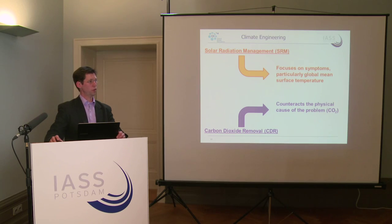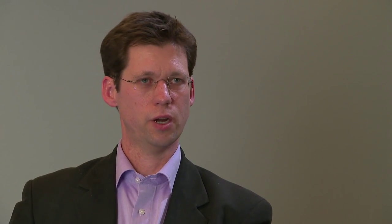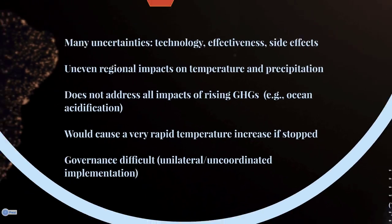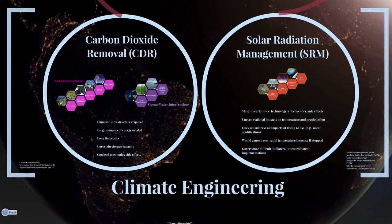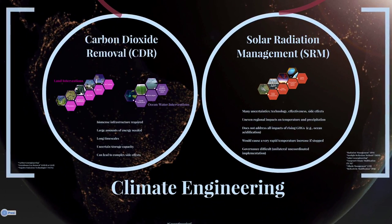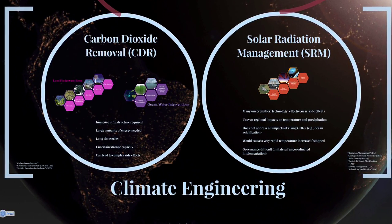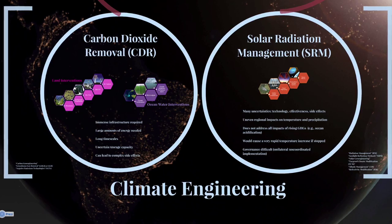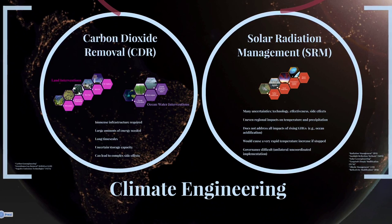So in addition to mitigation and adaptation, there are two basic streams of thought: one is removing carbon dioxide from the atmosphere — CDR — and the other is reflecting back more sunlight — solar radiation management. Together, these are called climate engineering, and another term often used for them is geoengineering.